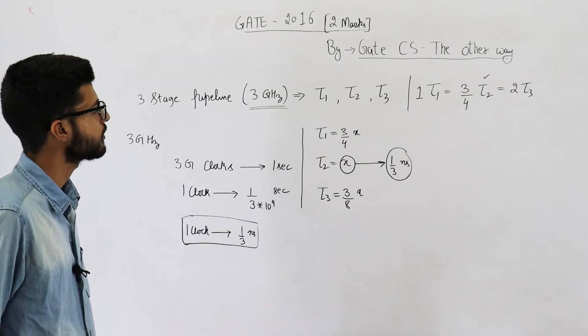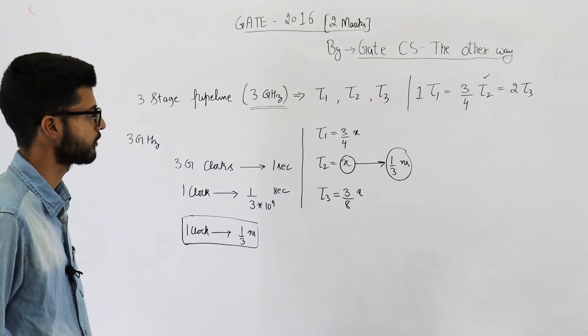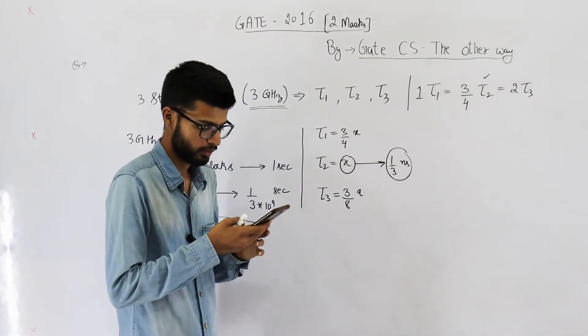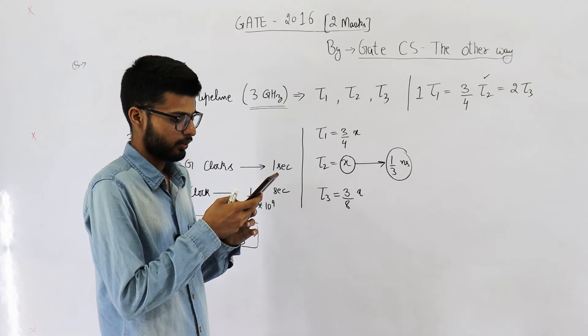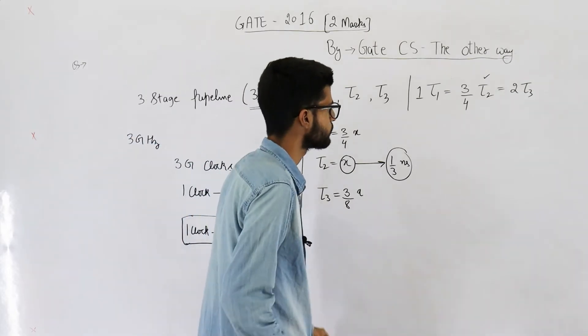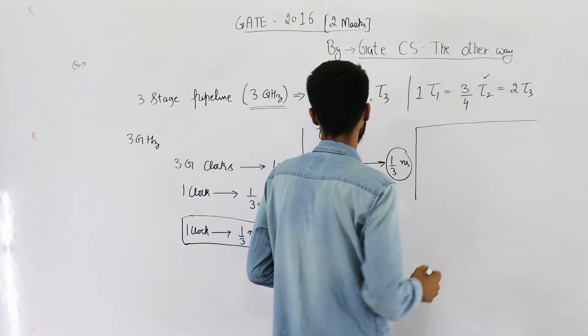Now, they are saying the stage with largest delay split into 3. Sorry, 2. Let me read. Was it 3 or 2? Yeah, it is 2, 2 pipeline stages.